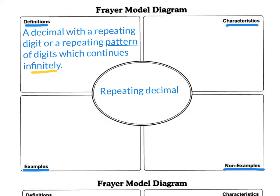So the same number repeats forever, or the same pattern continues to repeat infinitely. So take some time and fill in the definition on your Frayer model. Hit pause on the video if you need to.